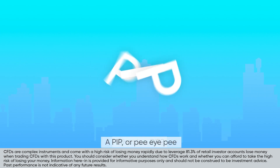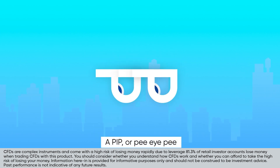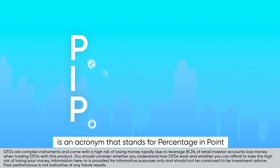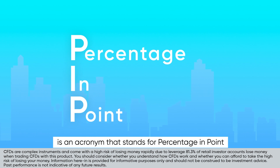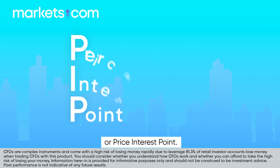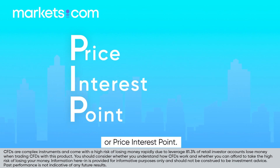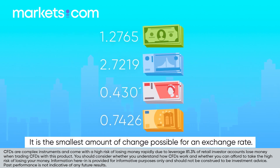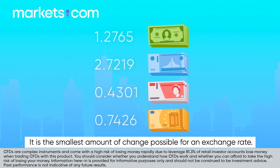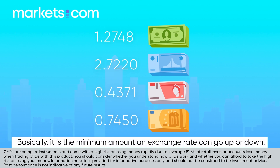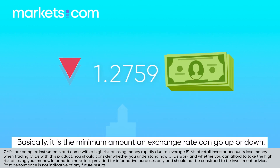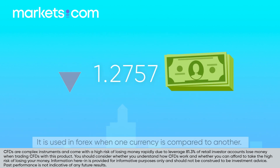What is a PIP? A PIP is an acronym that stands for percentage in point, or price interest point. It is the smallest amount of change possible for an exchange rate — basically, the minimum amount an exchange rate can go up or down.